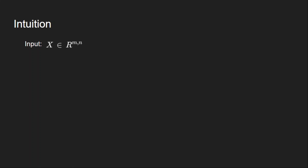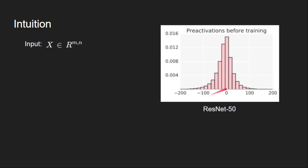Let us consider input x with dimension m by n, where m is the batch size and n is the number of features. We assume that x belongs to a normal distribution, which is observed in most networks — the pre-activations, meaning the input going to the activation function, follow a normal distribution. This is demonstrated on ResNet-50 on the ImageNet dataset.